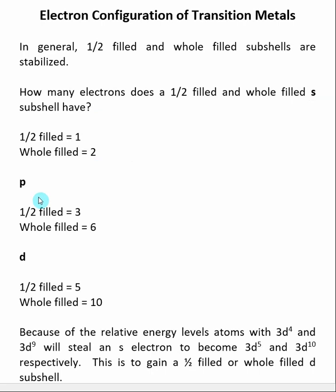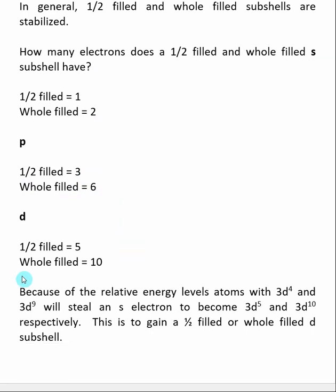For a P subshell, half-filled would be three and whole-filled would be six. So remember, a P subshell can hold on to six electrons. Kind of the important one is that a D subshell can hold 10 if wholly filled and half-filled is only five.